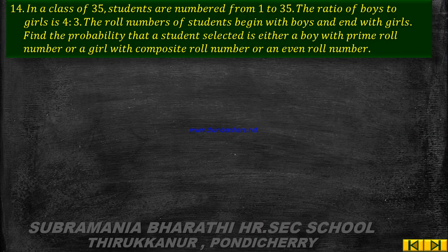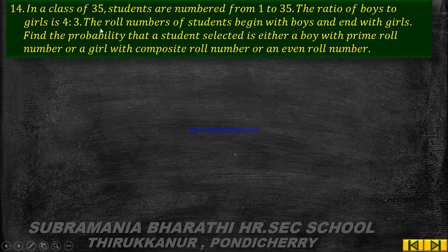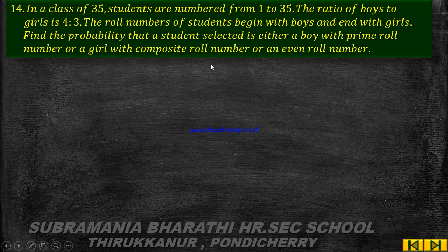Hi students, Probability learn exercise 8.4, 14th question. In a class of 35 students are numbered from 1 to 35. The ratio of boys to girls is 4 is to 3. Roll numbers of students begin with boys and end with girls. Find the probability that a student selected is either a boy with a prime roll number, or a girl with a composite roll number, or an even roll number.